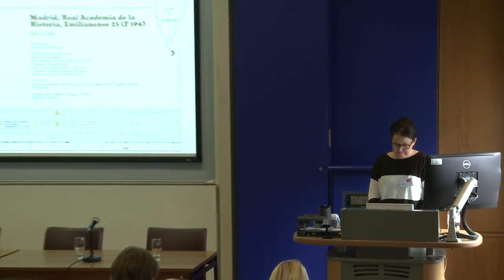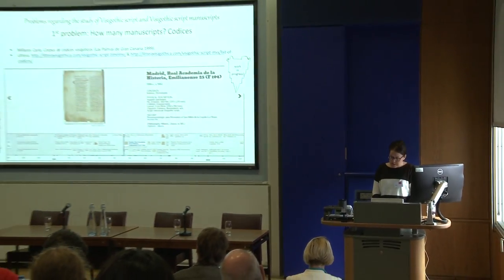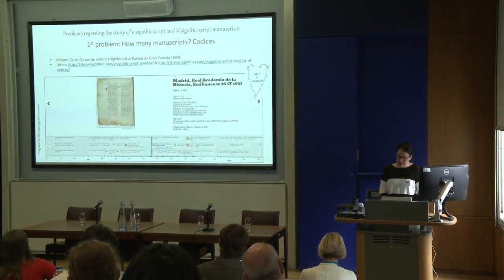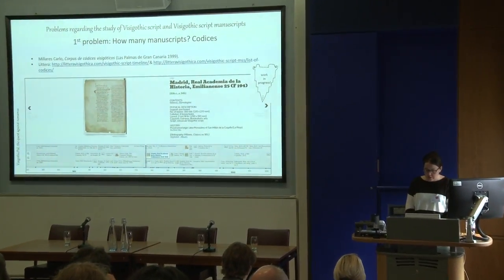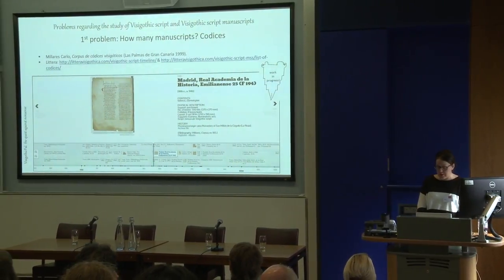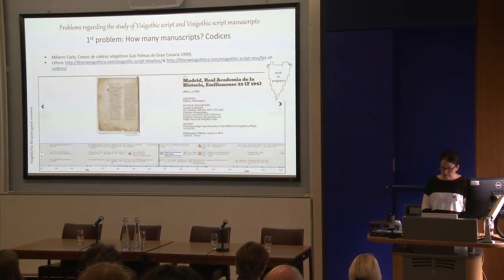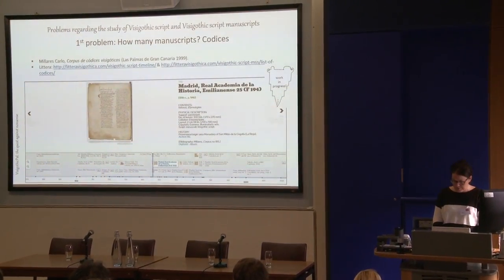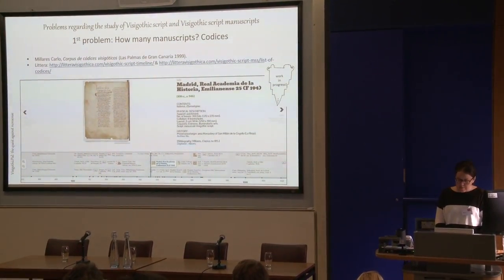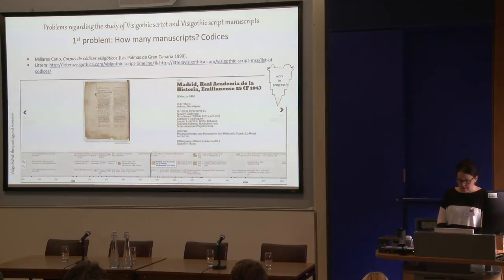The first problem: we, the scientific community, do not know how many manuscript sources there are. Regarding the codices preserved, as a result of a project finished in the early 90s, there is a corpus of codices written in Visigothic script which lists a total of 352. This catalogue was compiled by many scholars in the field working together, but once it was published, it seems its aim faded, since no research group kept it updated.